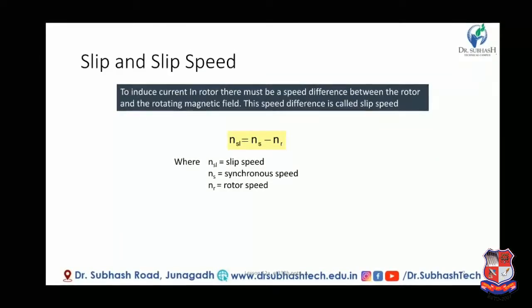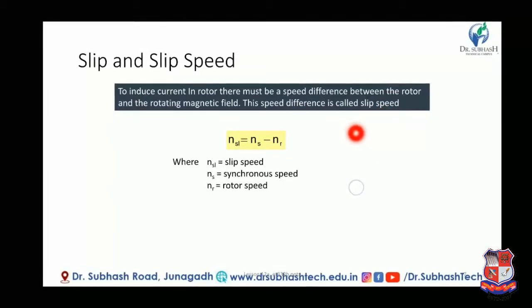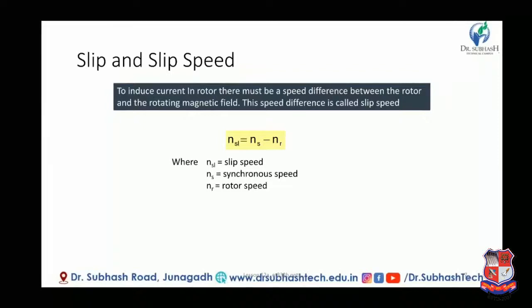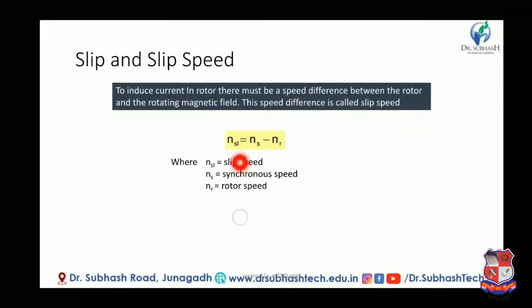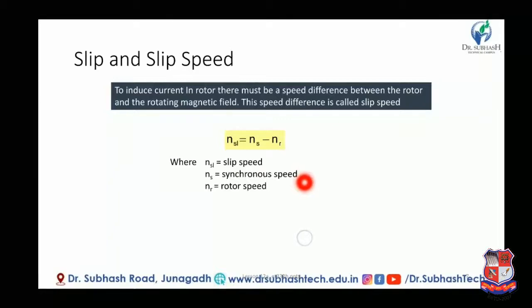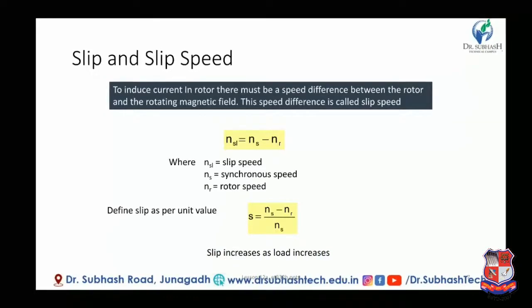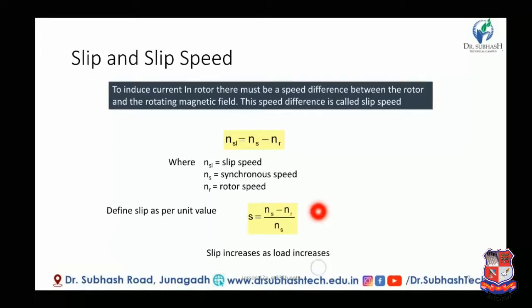To induce current in the rotor, there must be a speed difference between the rotor and the rotating magnetic field. This speed difference is called slip speed. The slip is defined as a per-unit value: slip s = (Ns − Nr) / Ns, where Ns is synchronous speed and Nr is rotor speed.